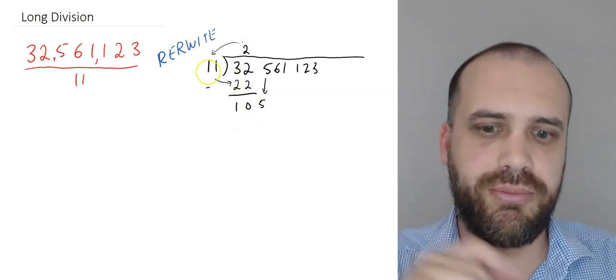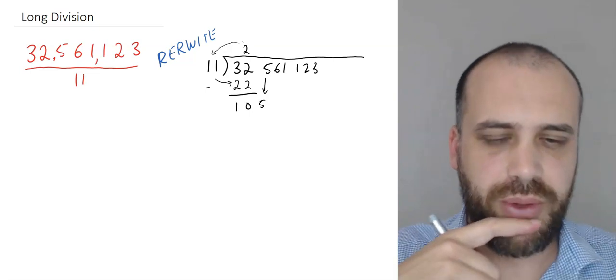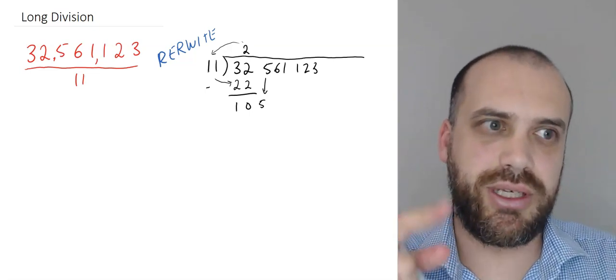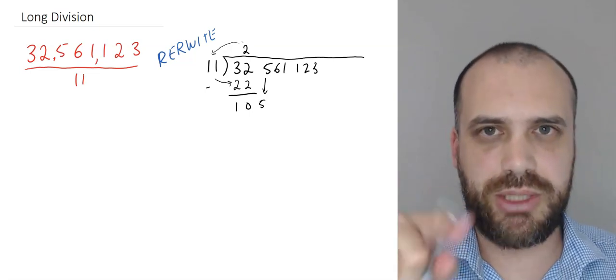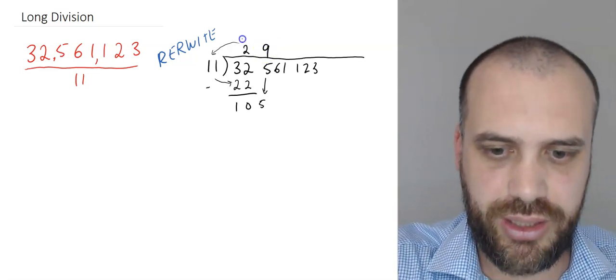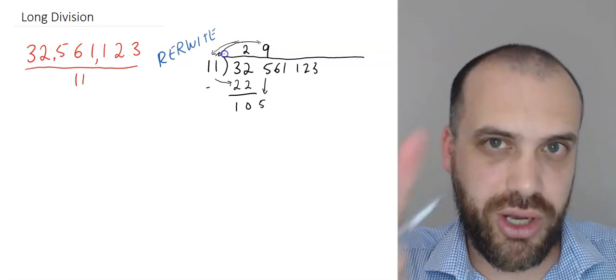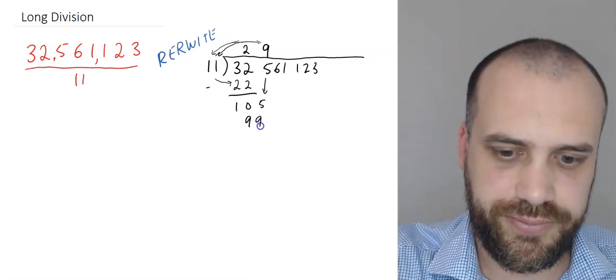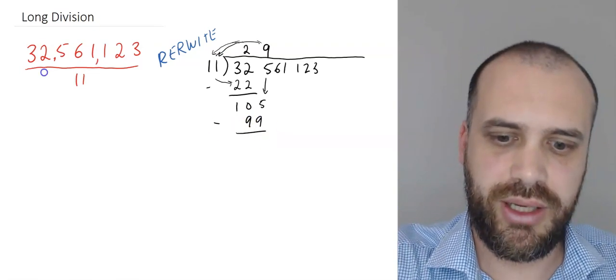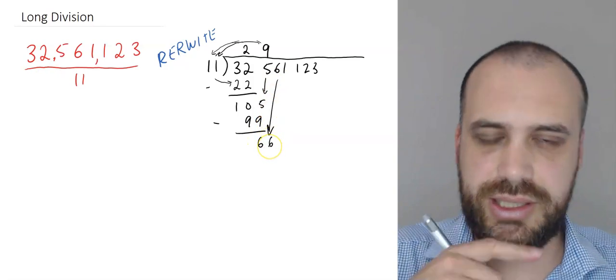105 divided by 11. How many times does 11 go into 105? Well, I know that 10 times 11 is 110, so it must be one less than that. So 9. 9 times 11, little arrow here. 9 times 11 is 99. Subtract one from the other. We have 6. Bring the next one down. 66.